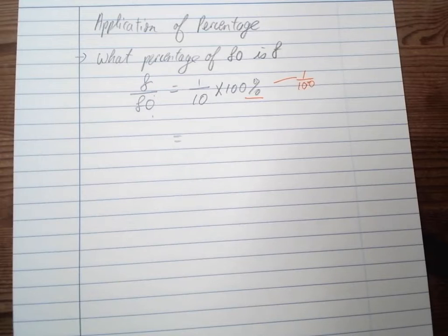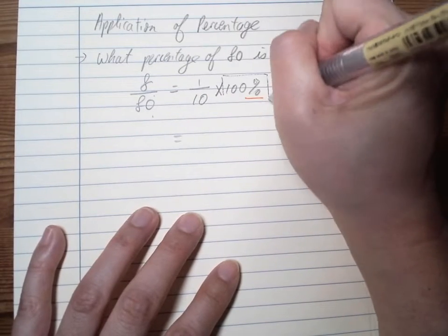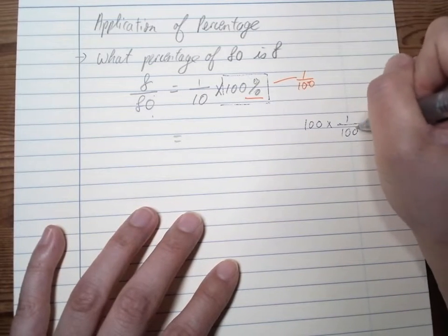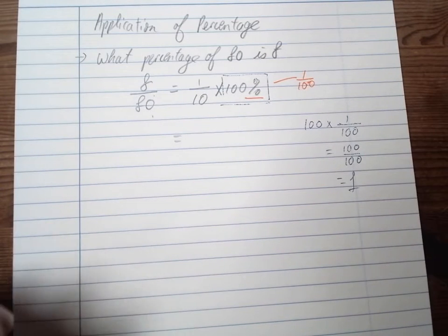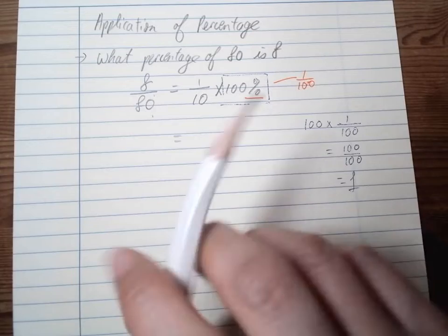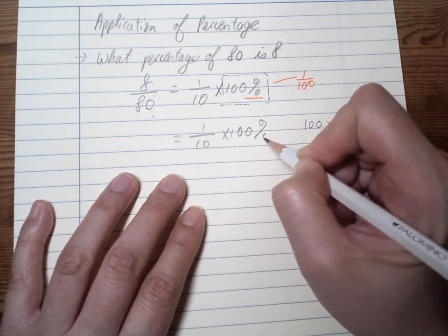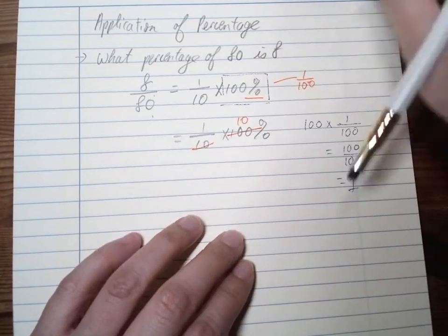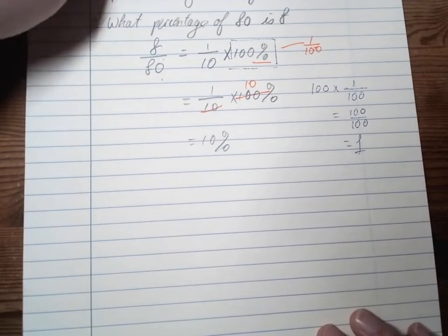We can do this because the percentage sign means 1 over 100. So the whole thing actually means 100 times 1 over 100, which gives us 100 over 100, which is 1 - doesn't change the value of it. So we cancel that out and now we have 10 percent. The other type of question is asking you a percentage of a whole part.